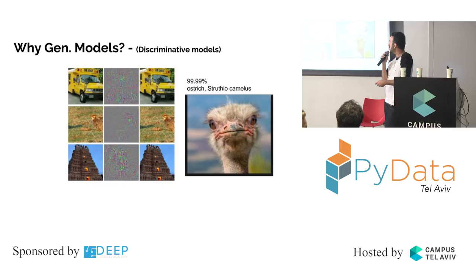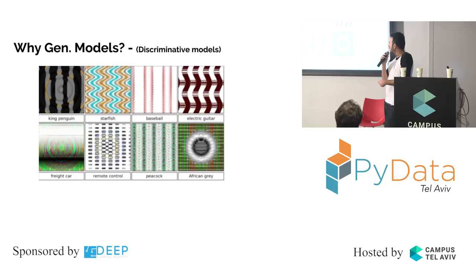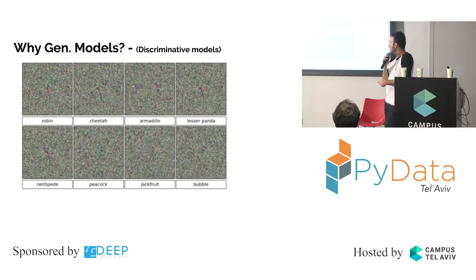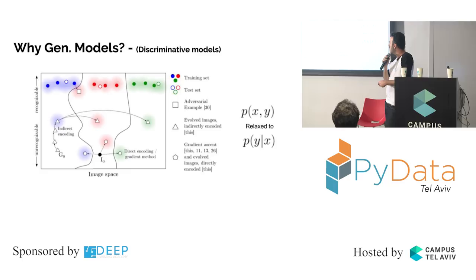They also showed other examples: some noise patterns that look like buttons on a remote control, and the network classifies them as a remote control. And pure noise that the network classifies as Armadillo with 99.99% accuracy — really confident. The reason is that we are not modeling the cluster of recognizable images. To fool a discriminative model, you just need to move away from the cluster of the real image distribution, past the hyperplane.